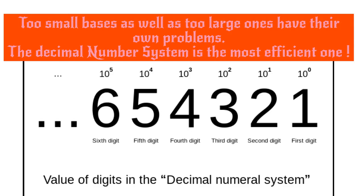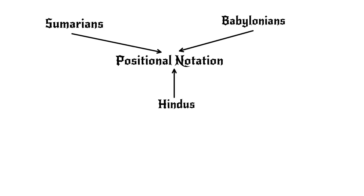Too small bases have problems with arithmetic and too large bases require learning of many digit symbols and an extended multiplication table. The invention of the positional notation, attributed to the Sumerians or the Babylonians and developed by the Hindus, was of enormous significance for civilization.